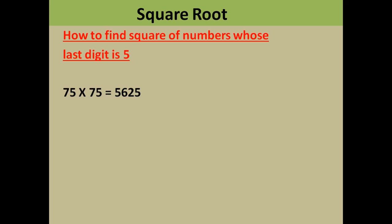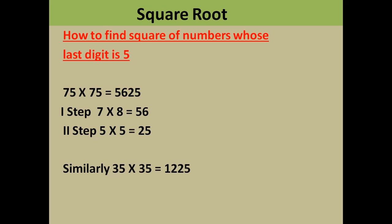Suppose you have to multiply 75 by 75, or find 75 squared — the answer is 5625. The method is: in the first step you multiply 7 with 8, which gives you 56. In the second step you multiply the last two digits of the original number, that is 5 into 5, which equals 25. In the first step, take the initial number and multiply it with the number succeeding it, write the answer, then append 25.